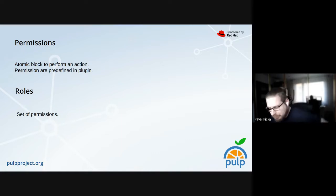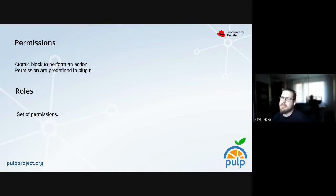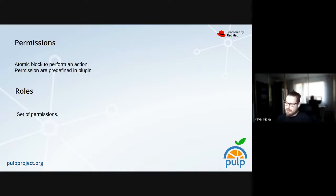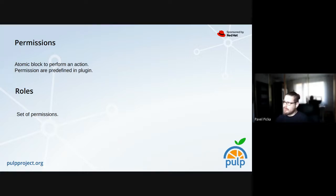Let's define a few terms about RBAC. The first is permission — it's like the atomic block for roles. A permission is one thing that allows a user or group to perform one action. I want to note from the start that permissions are hard-coded, so only plugin users or developers can create new ones.